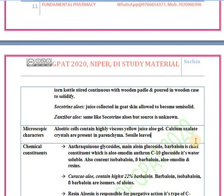Regarding microscopic characters of the aloe leaf: aloetic cells are present, which contain highly viscous yellow juice — that is the aloe gel. Calcium oxalate crystals are also present in the parenchyma. These leaves are sessile.